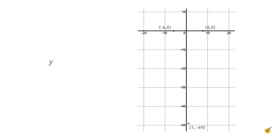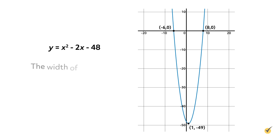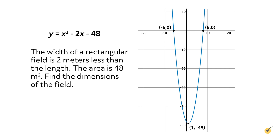Now that we've identified the x-intercepts and the vertex, we can use these points to create a graph. Plot the points and join them by a smooth curve. Recalling the context, since meters can't be negative, the only valid solution is x equals 8, which represents the field's length. Since the width is 2 meters less than the length, 8 minus 2 equals 6, so the width is 6 meters. The field is 8 meters long and 6 meters wide.